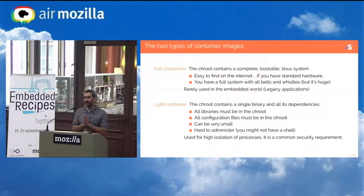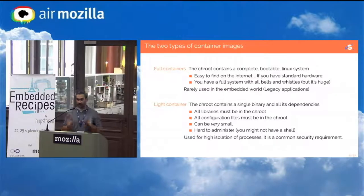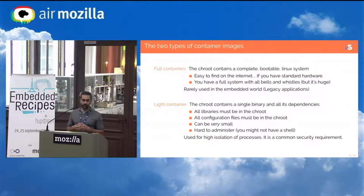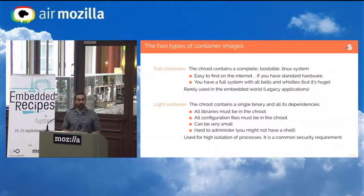Then you have light containers. The idea is you have one useful binary in your root, and you add all the libraries that binary needs, all the configuration files and data files it needs, and nothing else. It's very isolated — a really minimal set of stuff. It can be very small, but it can also be very hard to debug and administer because you have nothing in there. I've had to do images without a shell for customers with hard security requirements — it's a bit hard to see what's going on.